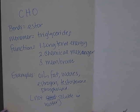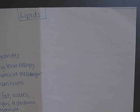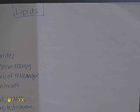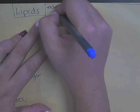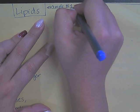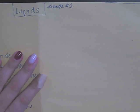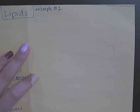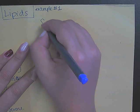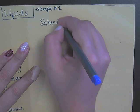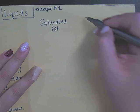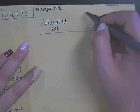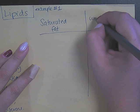Now I'm going to go over the level two information, which is looking at how the structure affects function in lipids. There are two examples I'm going to give you. Example number one is the difference between a saturated fat and an unsaturated fat. I'm going to draw a little t-chart here: saturated fat versus unsaturated fat.